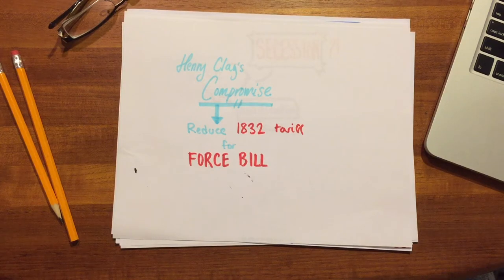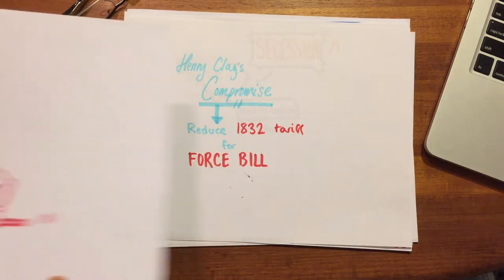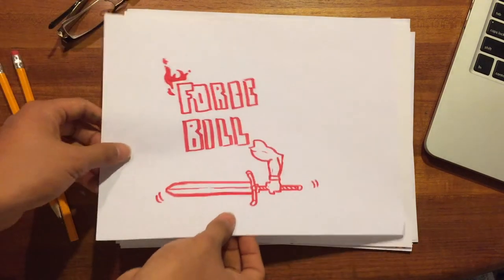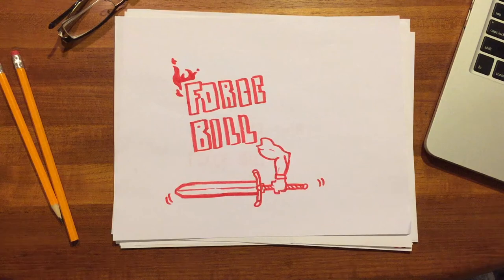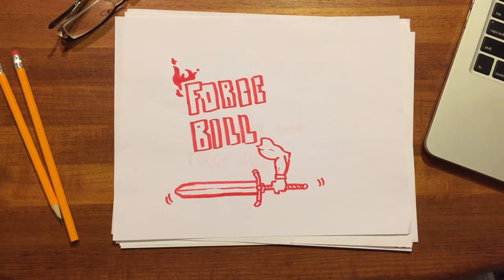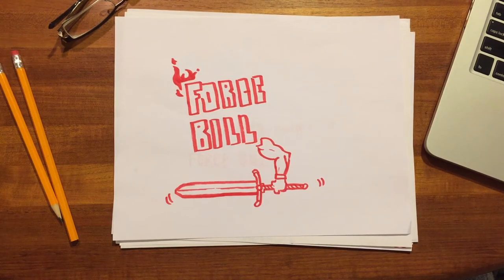At the same time, the Force Bill was passed, authorizing the President to use the Army and Navy, if necessary, to collect federal tariff duties — known as the Bloody Bill among Carolinians. Militant citizens saw this as an opportunity to extricate themselves without the loss of face.